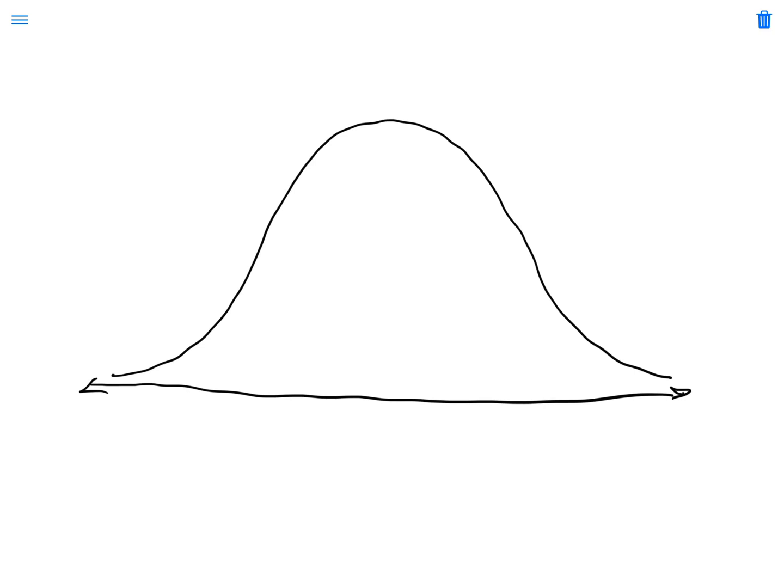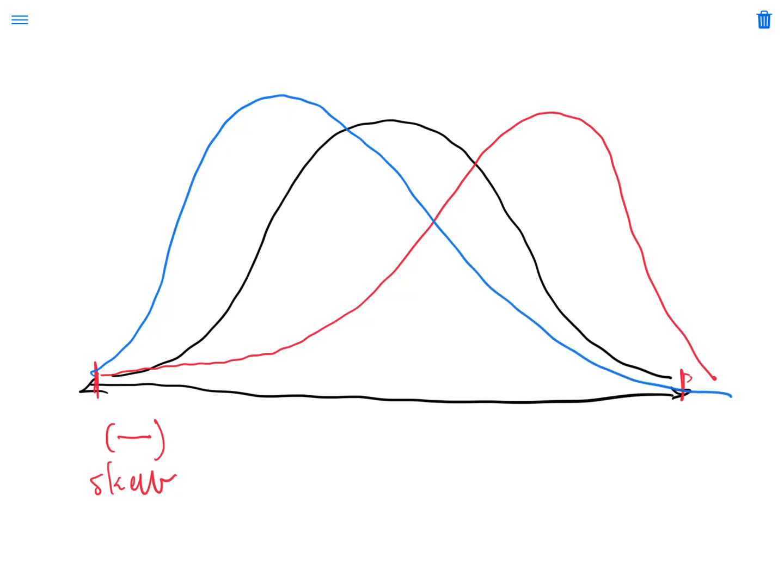We would say that these data have no skew at all, but if we had a data set that had maybe even the same range but instead of being nice and symmetrical, it has a longer tail to the left, we would say that these data have negative skew or that they have a tail that points to the left. And then of course, you could have positive skew as well, which has a tail that points to the right.